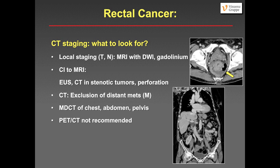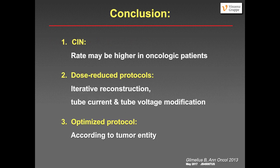In conclusion: in patients with cancer, the rate of contrast-induced nephropathy may be higher, so we must be aware and adapt our protocols to use less contrast material. Nowadays we can use dose-reduced protocols with iterative reconstruction and tube current and tube voltage modification. We should optimize CT protocols and tailor them according to the tumor entity.